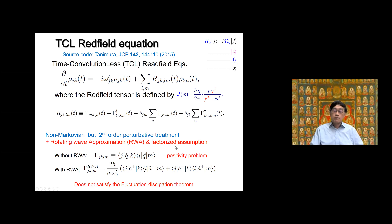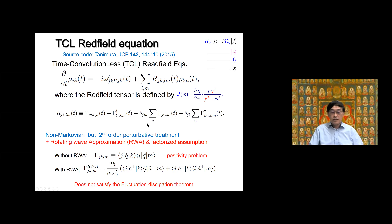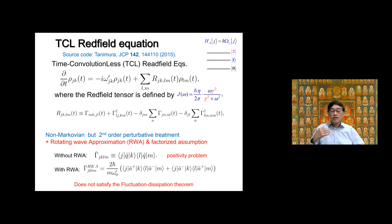Once you make these assumptions, the fluctuation-dissipation theorem is broken. This term consists of a real part (damping) and an imaginary part (thermal fluctuation), analogous to a Langevin random force and relaxation. These two terms must satisfy the fluctuation-dissipation theorem; otherwise the system does not reach thermal equilibrium states. This is the fundamental limitation of the Redfield-type equation.